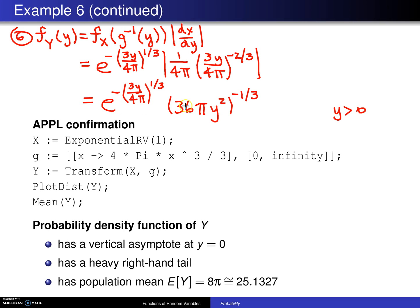So there is the pdf of Y, and here is some APPL confirmation that that in fact is the correct pdf. You set X to an exponential random variable with a rate of one. The function g is four pi x cubed divided by three, or four-thirds pi x cubed. That's defined from zero to infinity. Then using the transform function on the random variable X with the transformation g, you get the random variable Y, and it'll come back and it will give you this as a probability density function. If you want to take a look at this thing, PlotDist Y will appear on the next page. And then finally, if you want the mean of this distribution, you can take mean of Y.